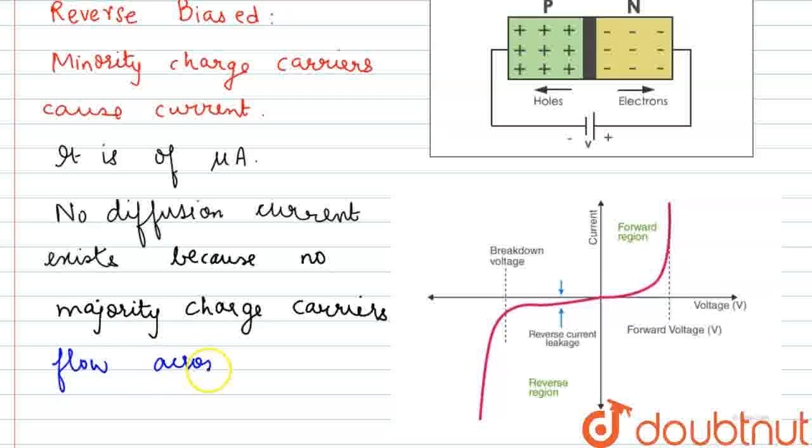...flow across the depletion layer. For diffusion current to exist, these majority carriers have to flow across the depletion layer, but that is not happening. There is no diffusion current.